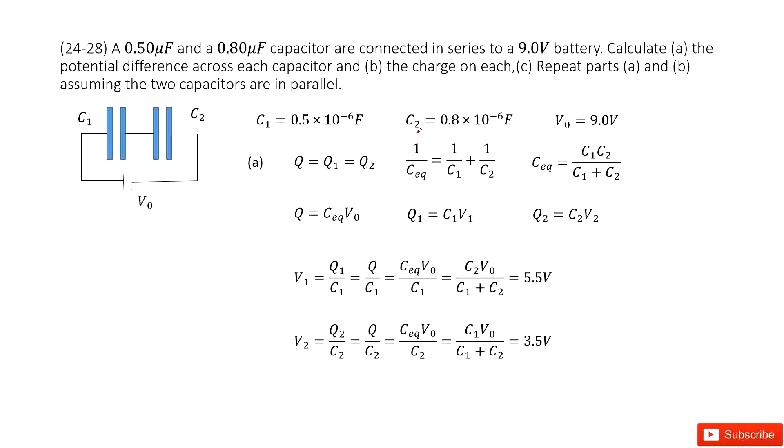The question asks what is the potential difference across each capacitor. That means we need to find V1 and V2. As we know, V1 is Q1 over C1, and V2 is Q2 over C2.